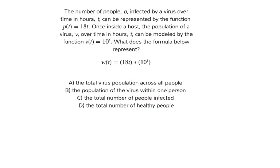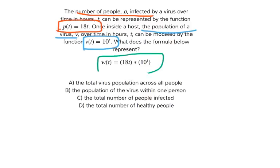What does the formula below represent? The number of people infected is p equals 18t, and the population of the virus goes with this formula. So what does it represent when we have w of t and we multiply 18t times 10 to the t? This is essentially equal to p of t times v of t.